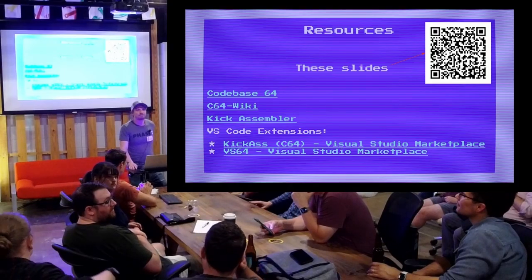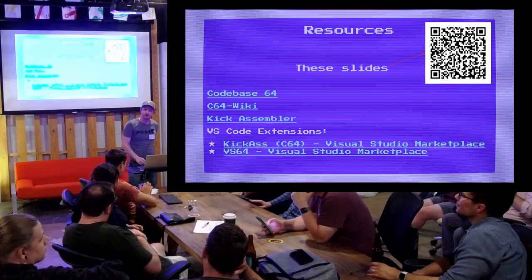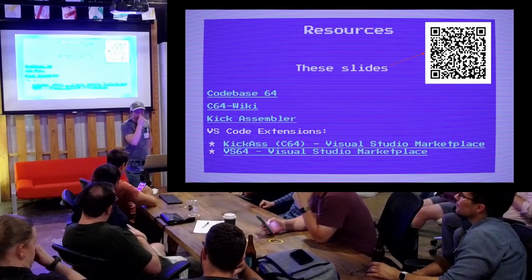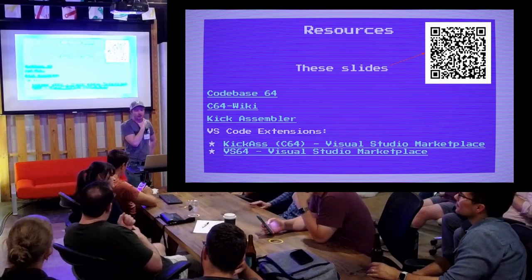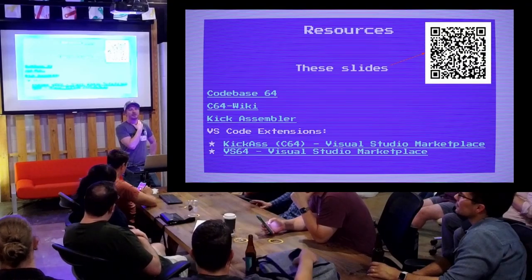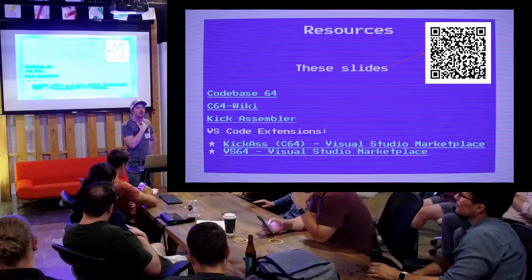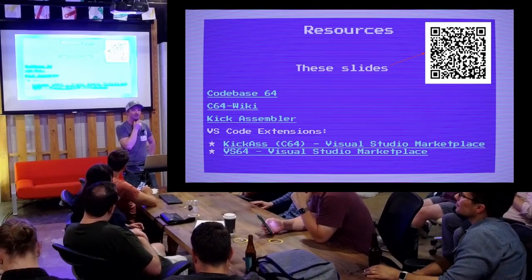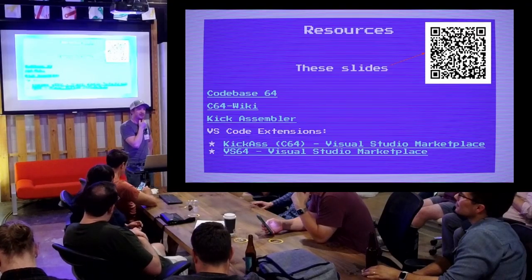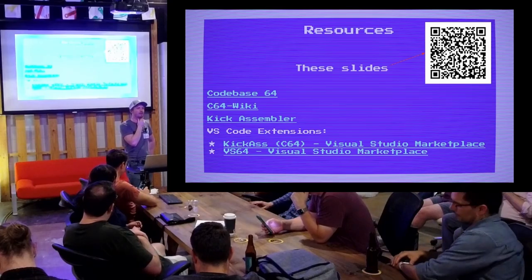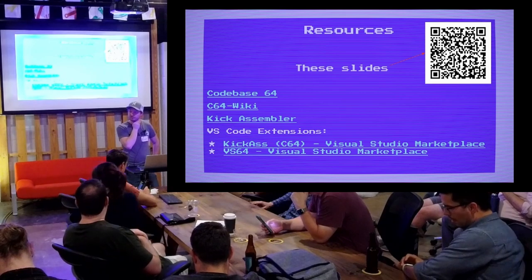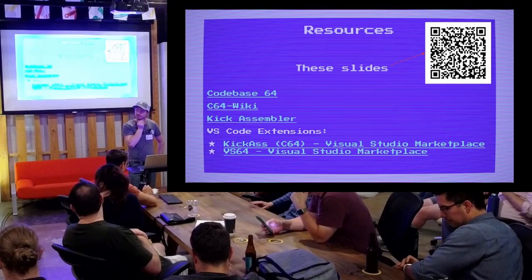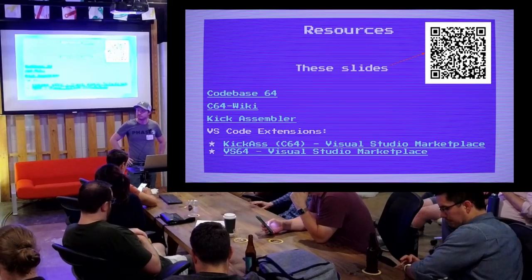Someone asked whether the game developers at the time were writing assembly or using a higher level language. I don't know for certain, but I don't think there was much in the way of higher level options. There was BASIC — the Commodore 64 shipped with BASIC on the ROM — but for a game of that caliber, I'd be surprised if they wrote it in BASIC because it's so slow. Most actual games at that time were written in assembly. I don't think C was really a thing for the C64 at that point. The C64 has not lent itself well to most higher level languages.